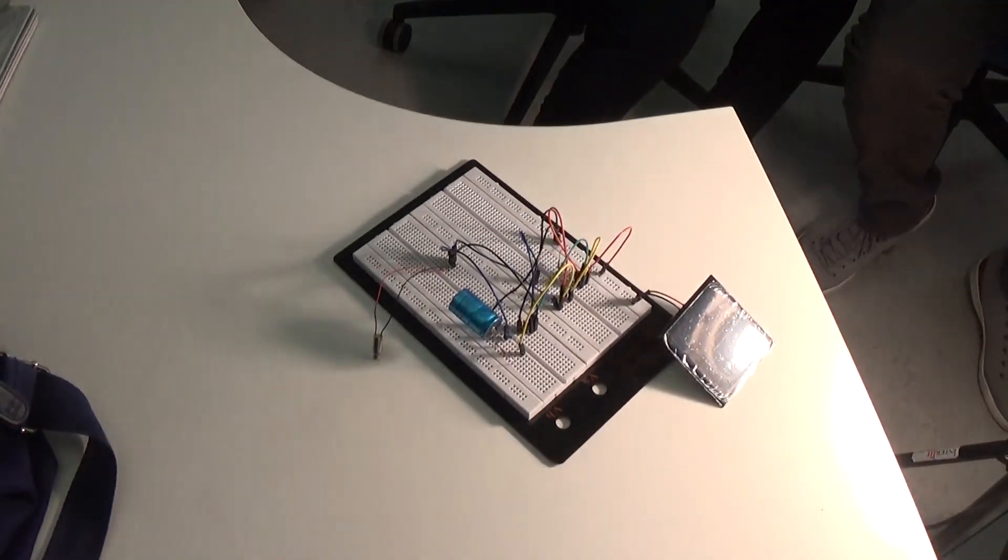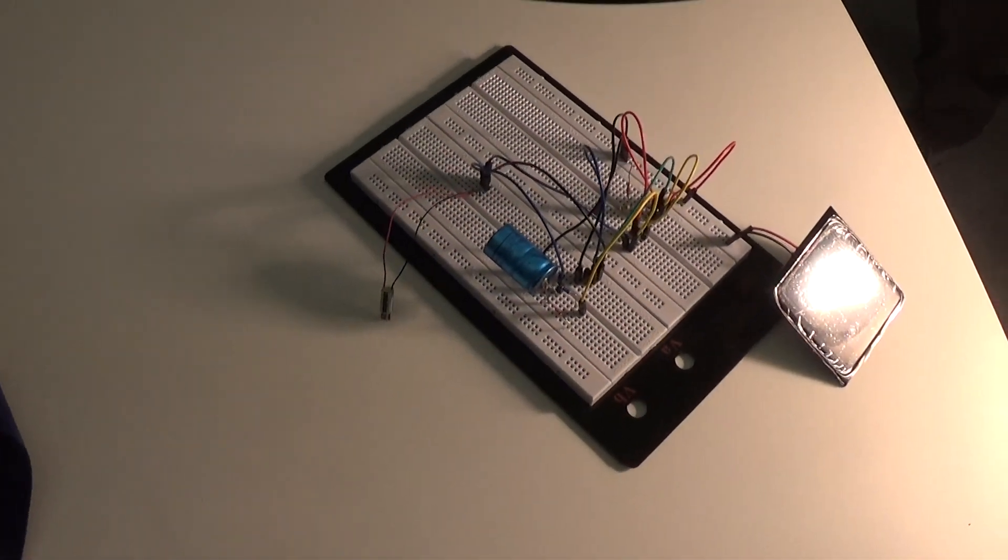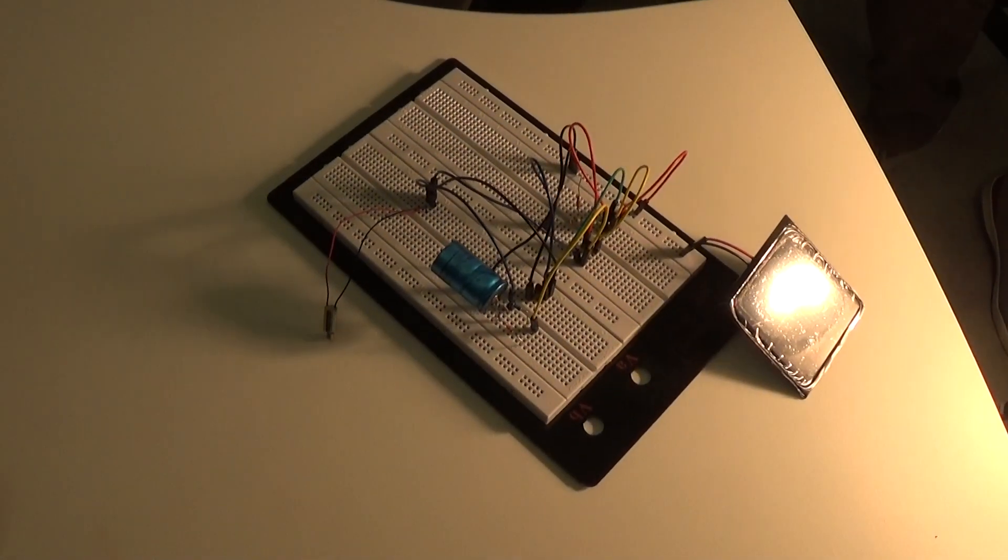OK, so here we are. This is a Type 3 solar engine and it's had one side of it built. It seems to be popping away quite merrily there. What size cap have we got on there?